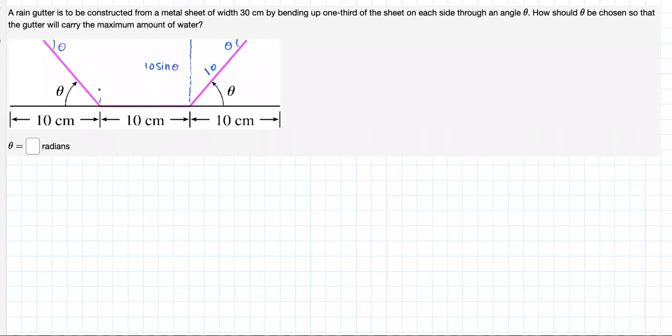Here theta as well, so this height should be 10 sine of theta, right? Now this base should be 10 cosine of theta, this base 10 cosine of theta, and this piece in between is just 10.